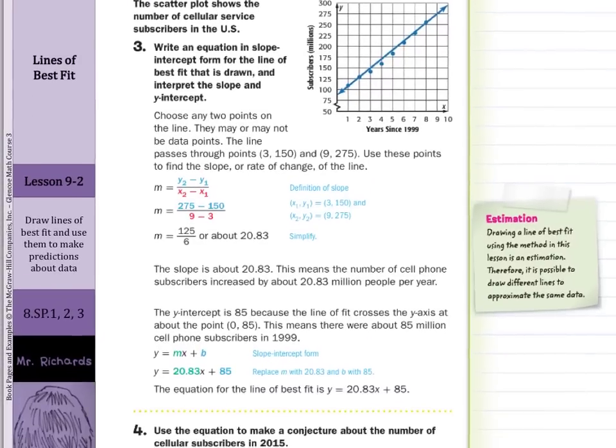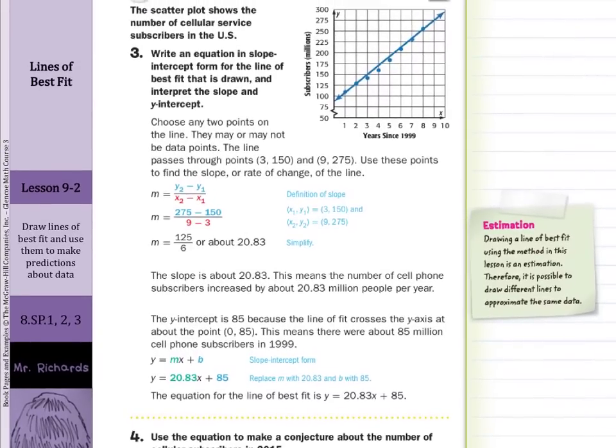And if we go ahead and take our next step and write this in slope intercept form, that is, remember, y equals mx plus b. We know our slope. We calculated that to be 20.83. We know our y-intercept is 85. And so the equation for the line of best fit is y equals 20.83x plus 85.